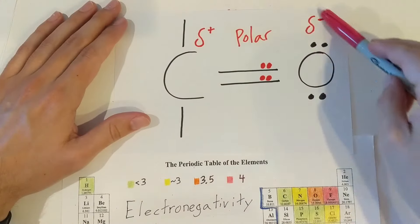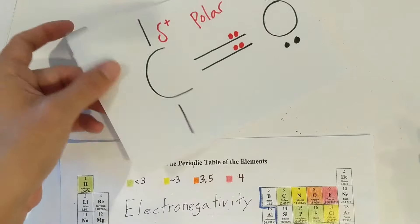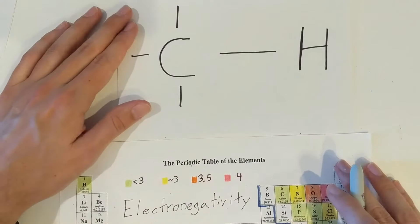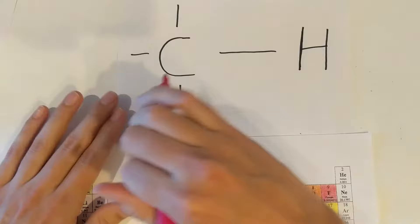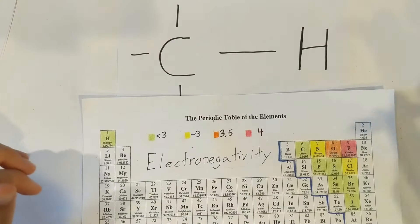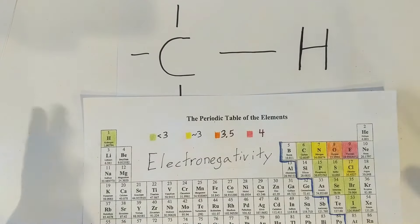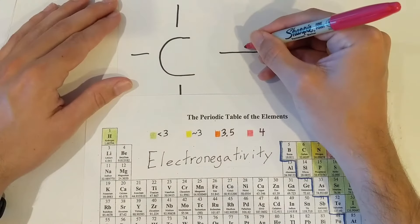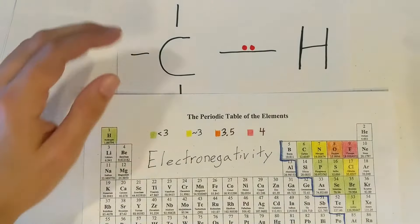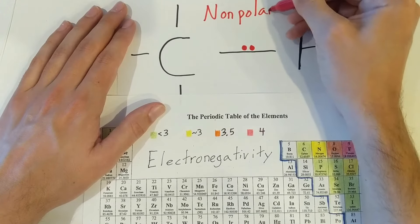We're not really worried about how much these charges are — they're something between zero and one, we just need to know that they exist. Our last example is carbon and hydrogen. Because they're different elements they technically have a slightly different electronegativity, but they're both under three and pretty close to each other. So we're going to draw the electrons pretty close to the middle and call this a nonpolar bond.